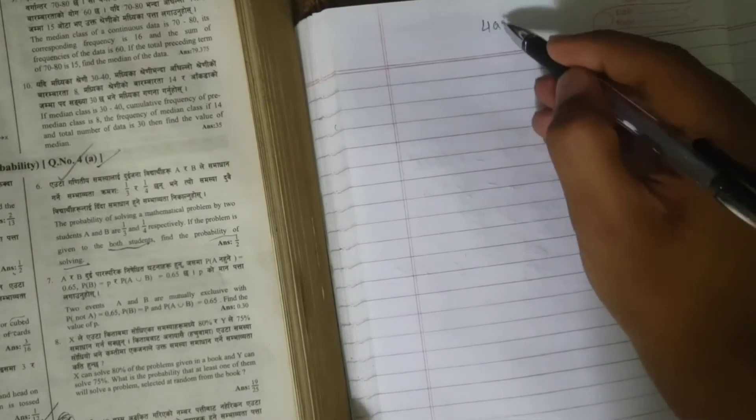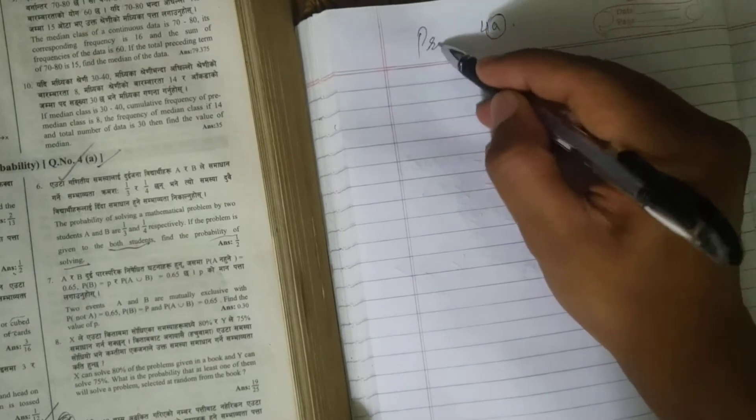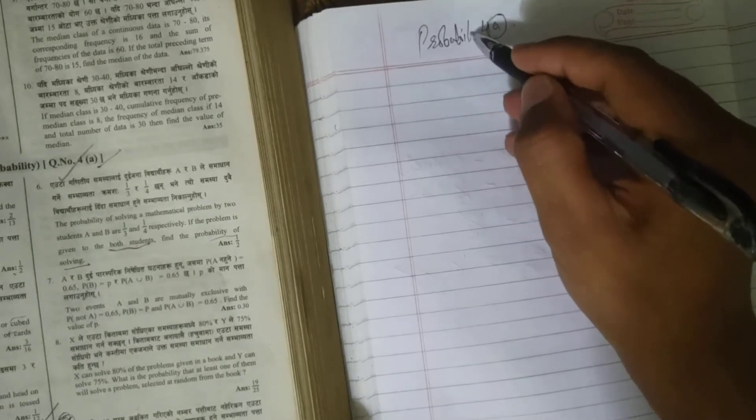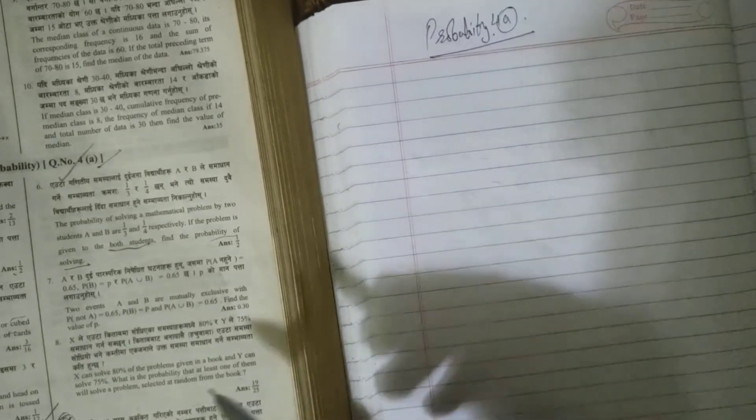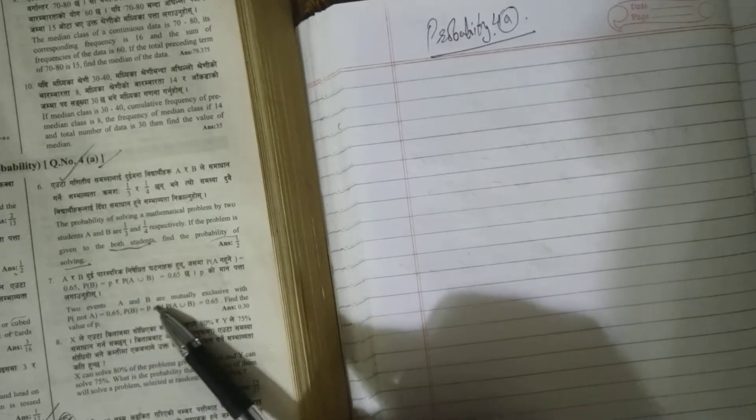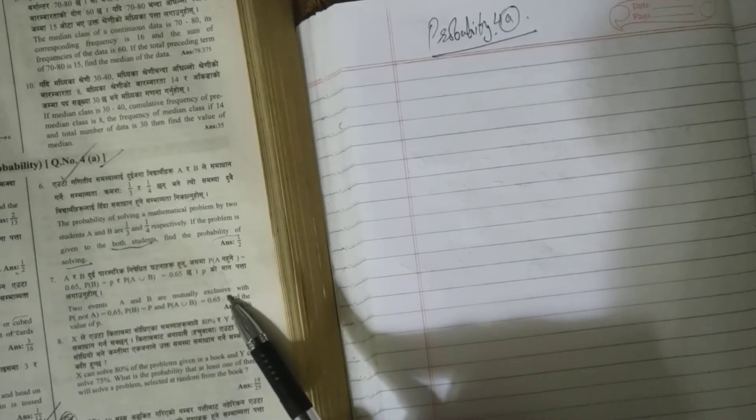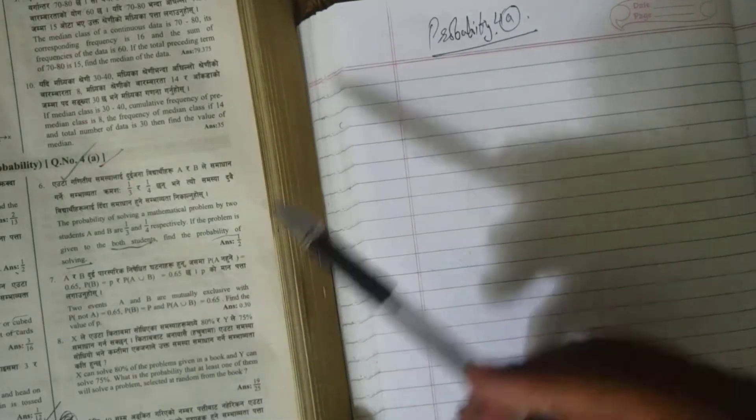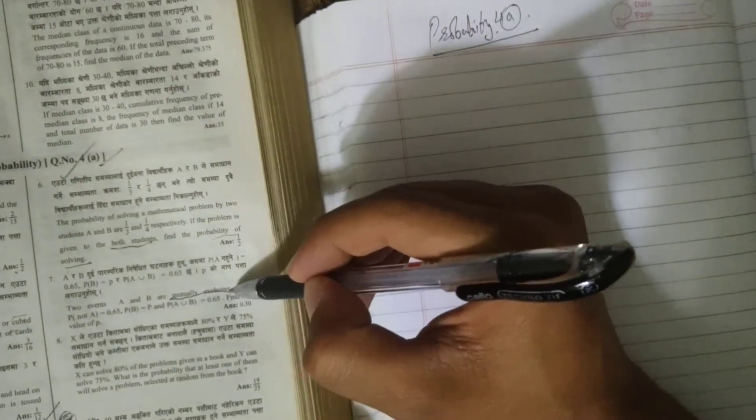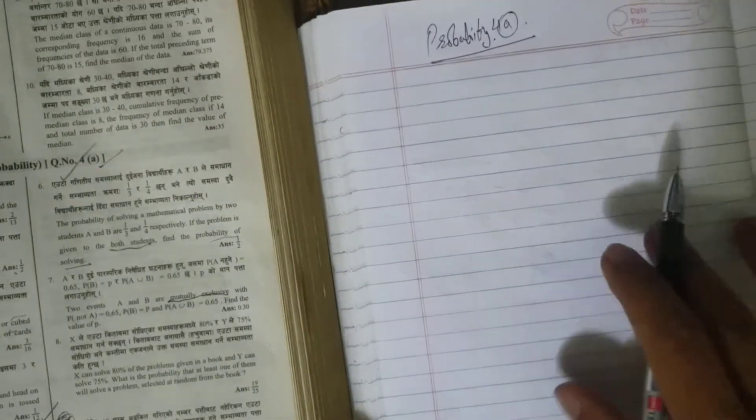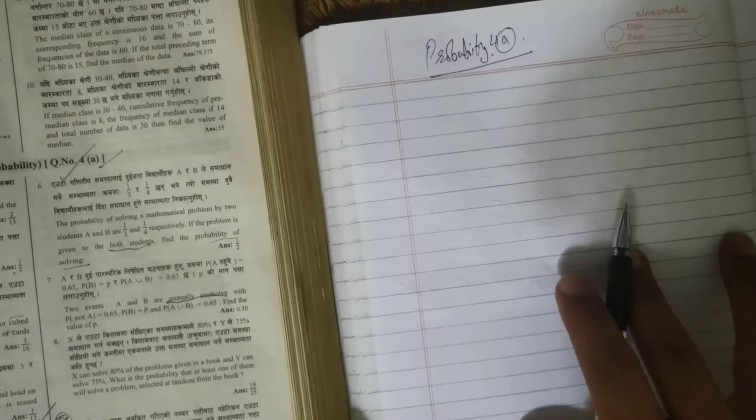Hello and welcome back guys. We are still doing question number 4a of probability. What we've been given in this particular question is that two events A and B are mutually exclusive. The equation clearly says that means they are not dependent on each other.